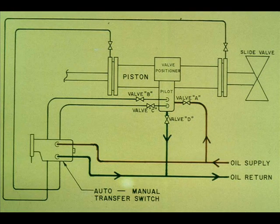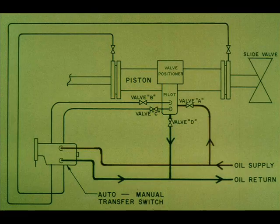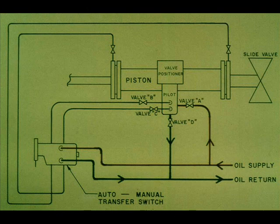This drawing shows the supply and drain lines, the auto manual switch, and the valve positioner. To bypass the positioner, close valves A, B, C, and D.